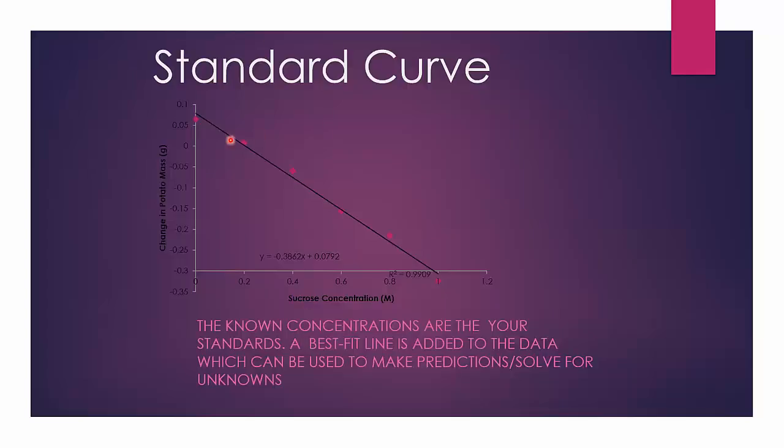The utility of this curve is that you can now test an unknown concentration of sucrose, one that you don't know the concentration of, and then using the equation of the line, you can then predict, based on the change in potato mass, you can predict what the unknown concentration was.